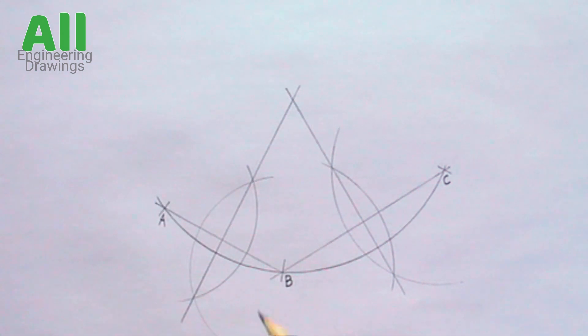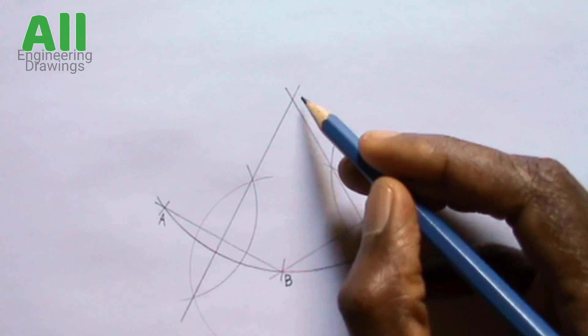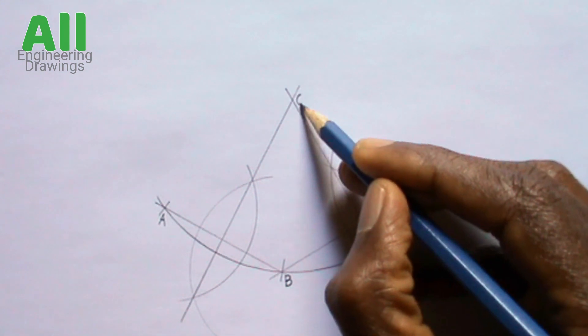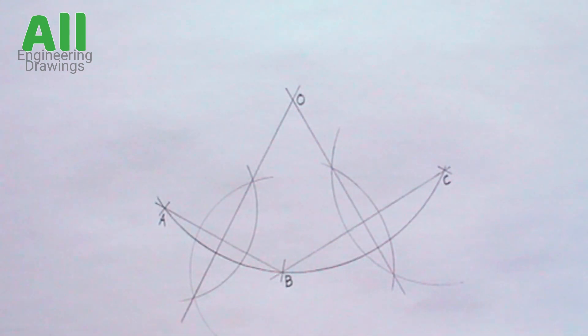The point where the bisectors intersect should be called O. Point O is the center of the arc.